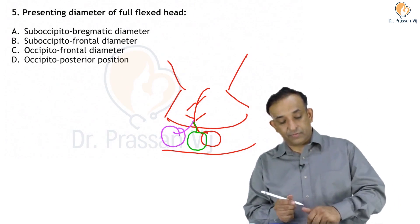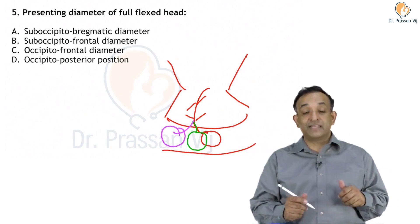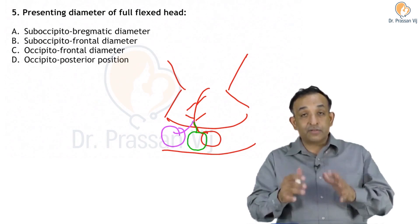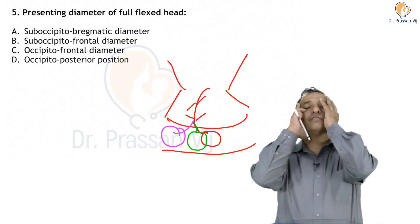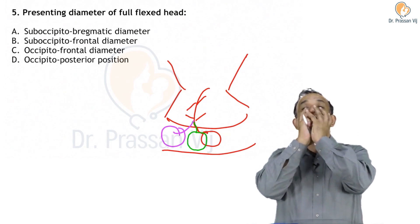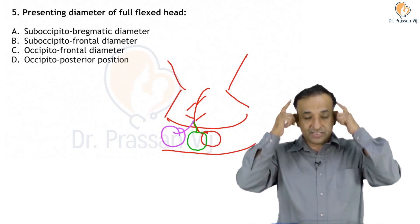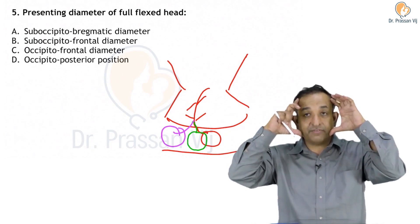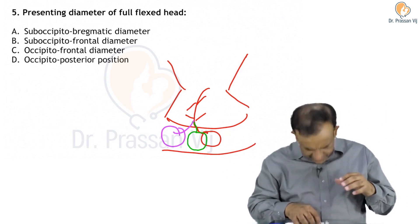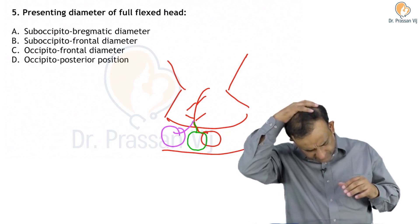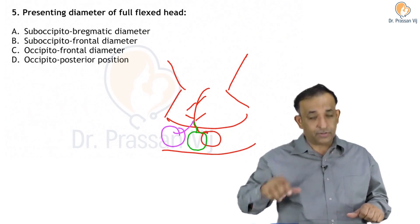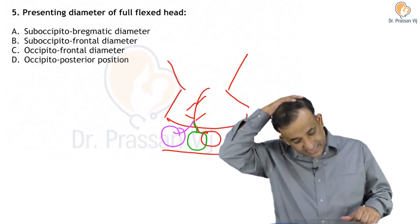If the head is extended trying to enter the pelvis, then this part of the head gets into the pelvis first - this is known as a face presentation. If the head is straight, this part is getting into the pelvis - this is known as the brow. And if the head is flexed, then this part of the presentation is getting into the pelvis - that is the vertex.